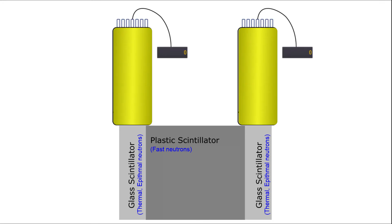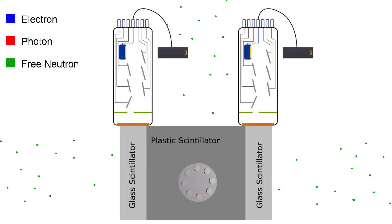The two glass detectors face opposite directions from each other. The plastic detector is at a 90-degree angle relative to the glass pair. Since these detectors are directional, they can only detect neutrons coming from the direction they're facing.